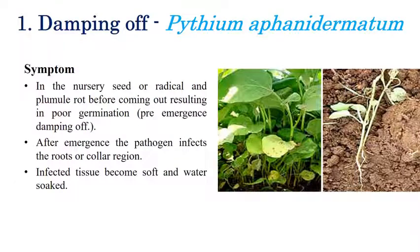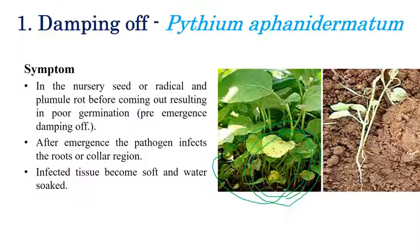The first disease is damping off. As mentioned, a variety of species are involved, but most damping off in Brinjal is caused by Pythium aphanidermatum. The symptoms are mostly confined to the nursery stage. We can observe poor germination of seedlings, and even if seedlings emerge, the pathogen infects the root at the collar region — the region just above the soil.